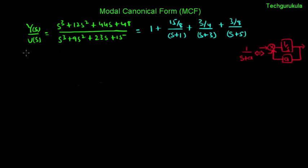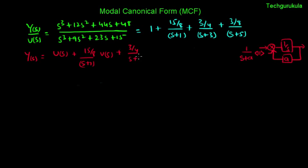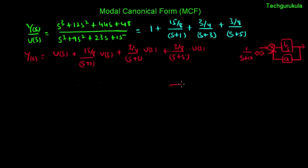We can rewrite the transfer function as Y(s) = U(s) + (15/8)/(s+1) · U(s) + (3/4)/(s+3) · U(s) + (3/8)/(s+5) · U(s). Let us represent this in terms of a block diagram. Y(s) is the sum of these four terms, with the first term being the input U(s) arriving directly at a summation point.